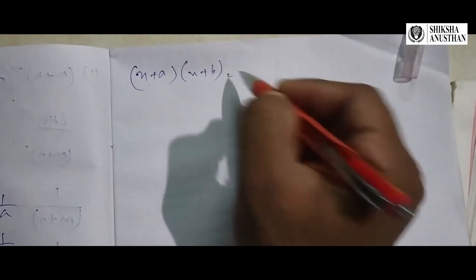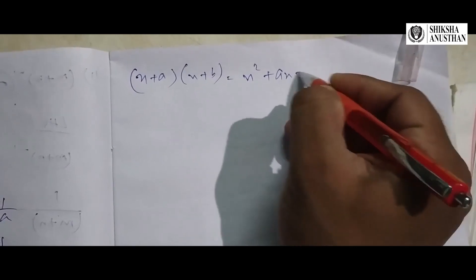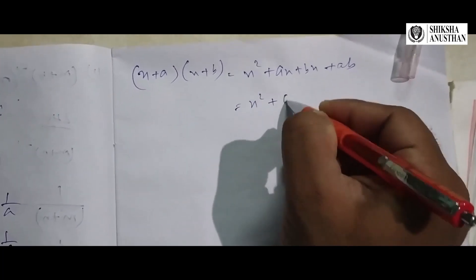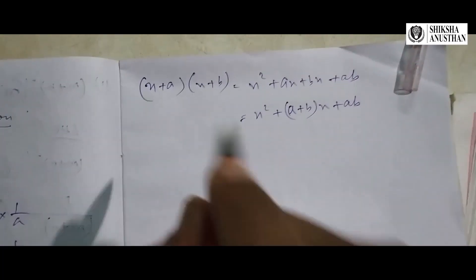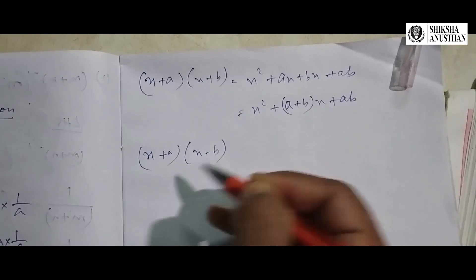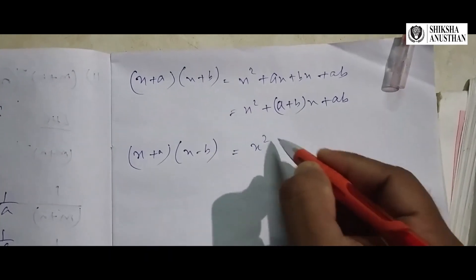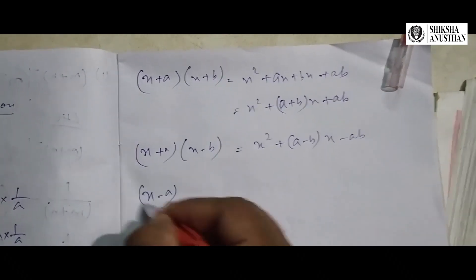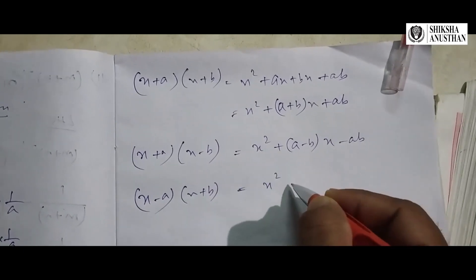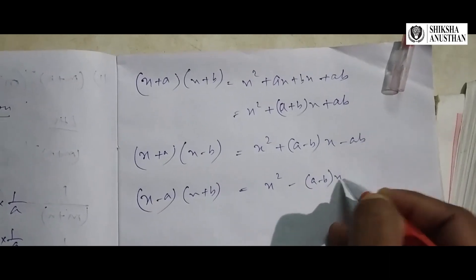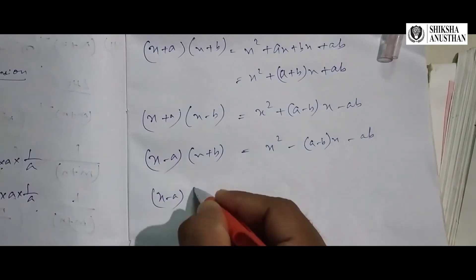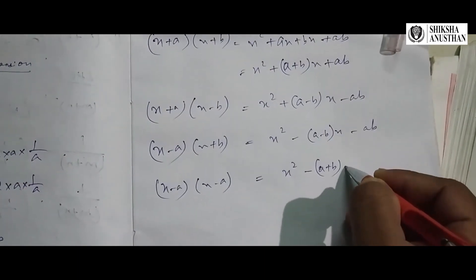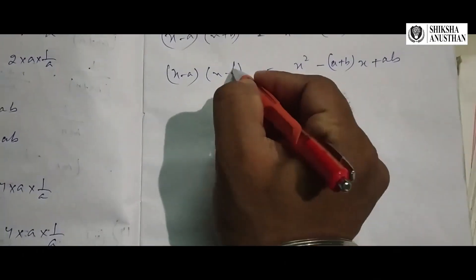(x + a) into (x + b), when multiplied, gives x square plus ax plus bx plus ab, which simplifies to x square plus (a + b)x plus ab. If b is negative: (x + a)(x - b) equals x square plus (a - b)x minus ab. If a is negative: (x - a)(x + b) equals x square minus (a - b) into x plus ab. And (x - a)(x - b) equals x square minus (a + b)x plus ab.